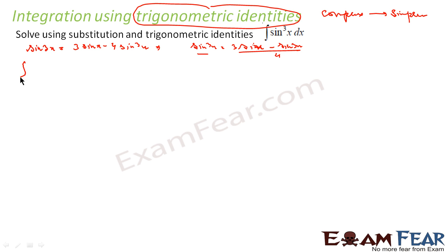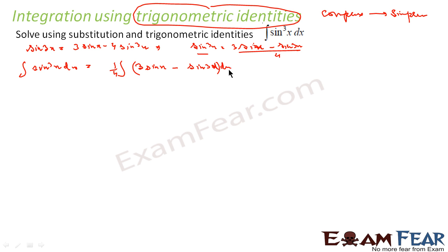So if I am supposed to find integration of sine cube x dx, I can rewrite this as integration of 1 by 4, the constant, and I have 3 sine x dx minus sine 3x dx. Finding this is not that difficult because this is sine x and this is also sine x form. Sine x becomes minus cos x.